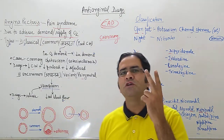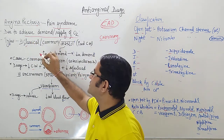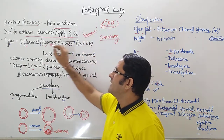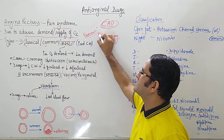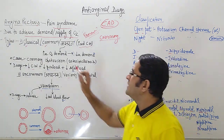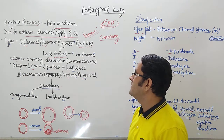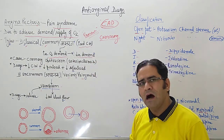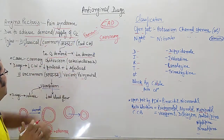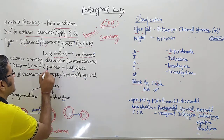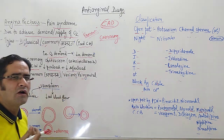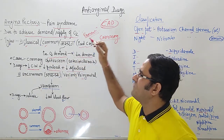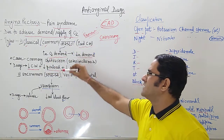Angina is of two types. The first is classical angina, also called common angina, which occurs during exercise. There is increased cardiac work and therefore increased oxygen demand. To treat this, we need to decrease the demand — drugs which decrease cardiac work, decrease preload, and decrease afterload. We will cover preload and afterload in the coming video.